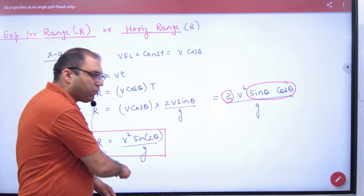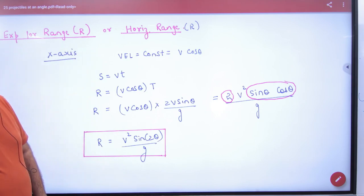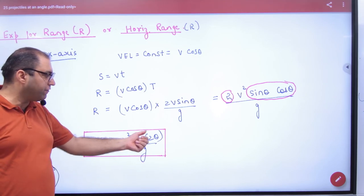So formula, note to be very important in the range. Range formula: v square sin 2 theta by g. Like in any question, if theta is 45 degrees, then sin of 2 into 45 will be 90.